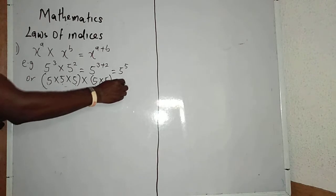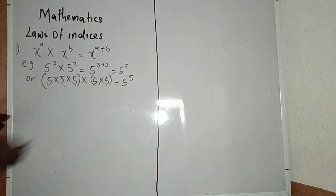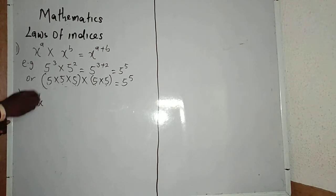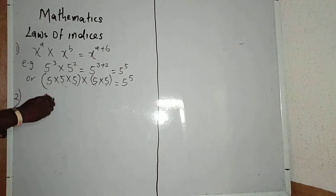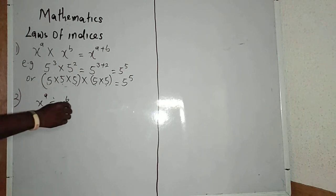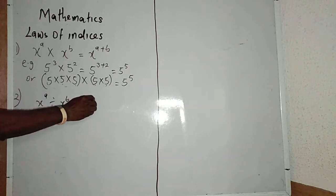Law 2: If I have x raised to power a divided by x raised to power b, it will be equal to x raised to power a minus b.